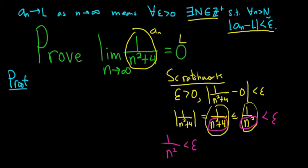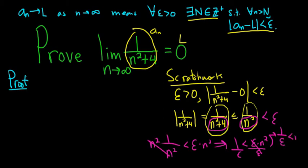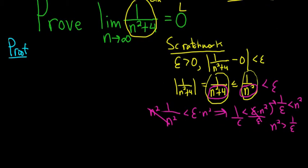So we want 1 over n squared to be less than epsilon. What we do now is solve for n: we multiply both sides by n squared, so we get 1 less than epsilon times n squared. Divide by epsilon, so we get 1 over epsilon less than n squared, which means n squared is greater than 1 over epsilon. Taking the square root of both sides, we get n greater than the square root of 1 over epsilon. So we can use the Archimedean property to choose an n bigger than the square root of 1 over epsilon.